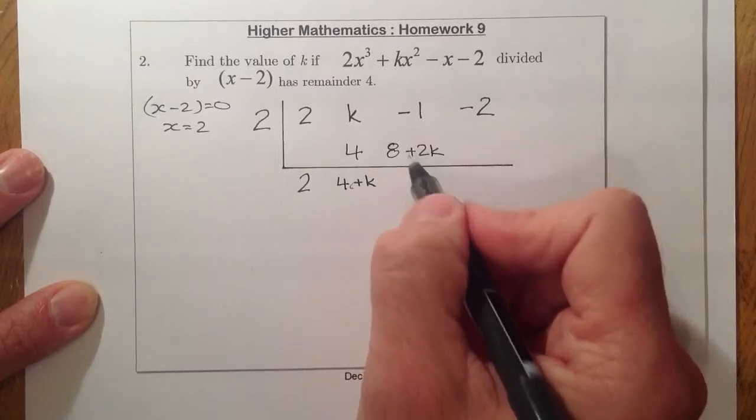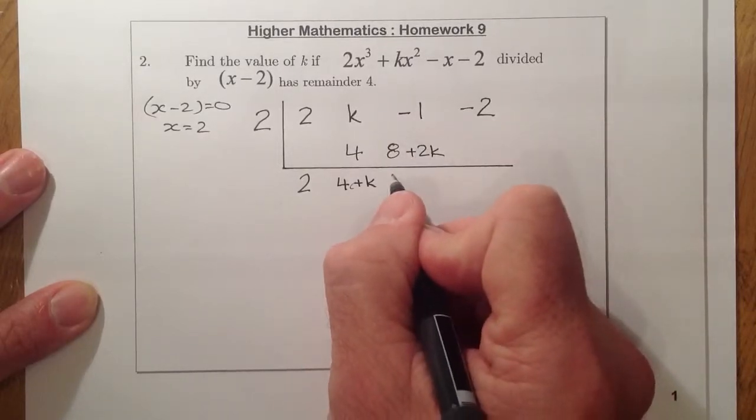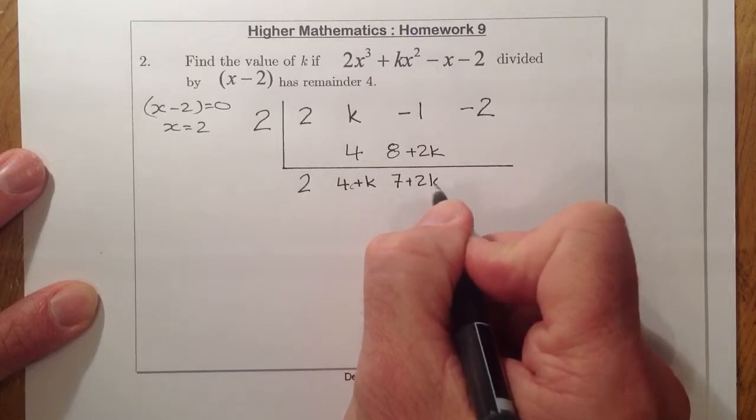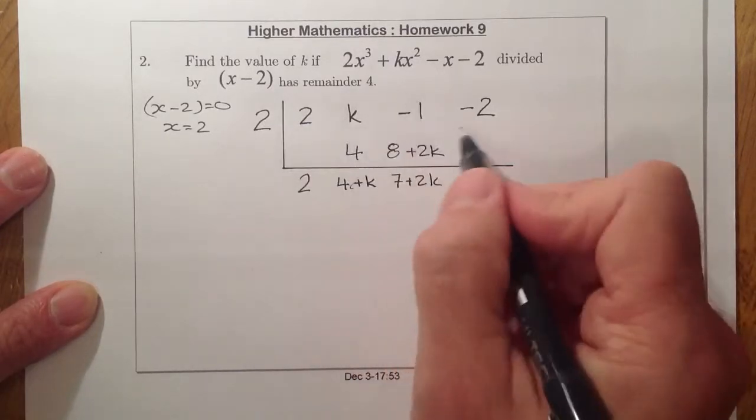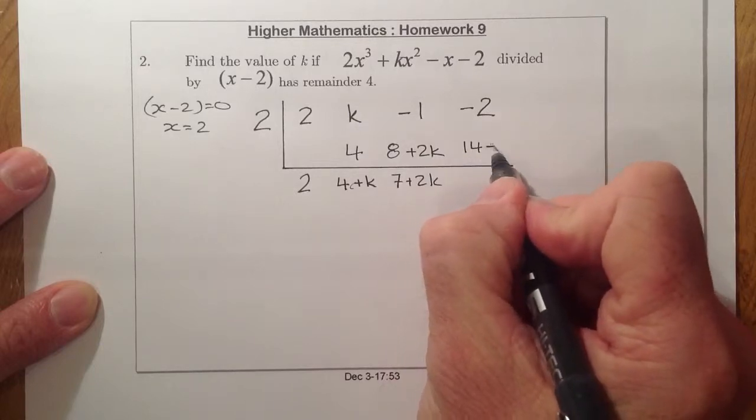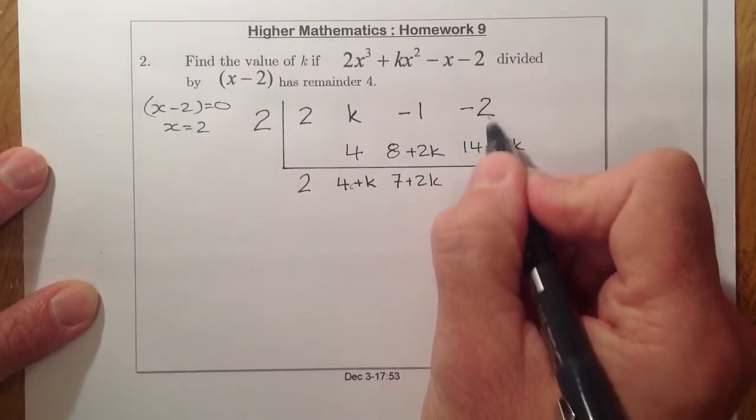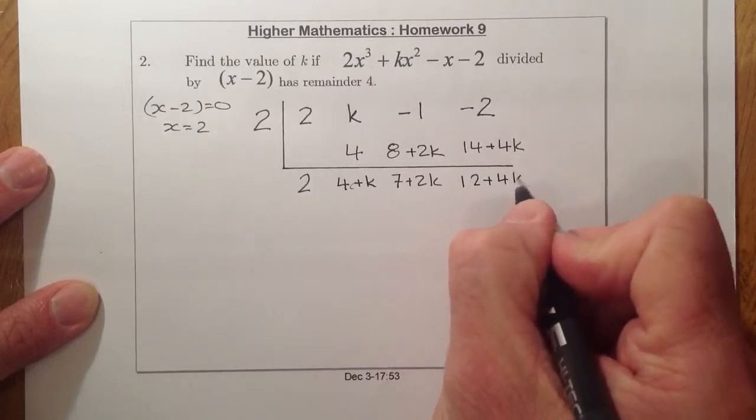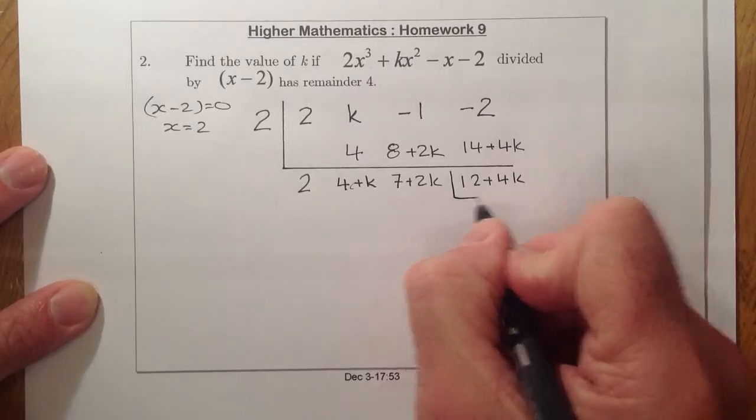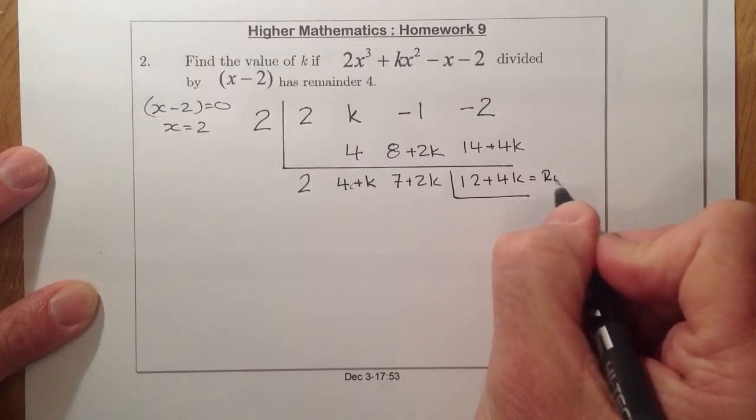I'll then gather these up, and that should give me seven plus two k. And I'll multiply this by two. So that should give me 14 plus four k. And I'll gather these together here, which should give me 12 plus four k. And I'll know that part there equals my remainder.